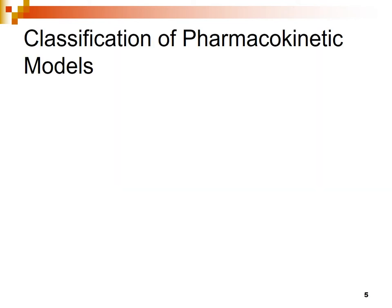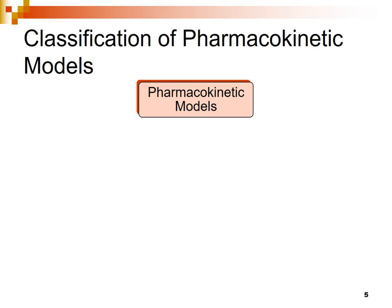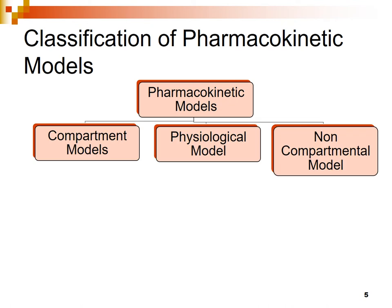Classification of pharmacokinetic models. Three types of approaches are used for estimation of different pharmacokinetic parameters: compartment models, physiological models, and non-compartmental models. Non-compartmental models are a model-independent method where different algebraic equations are used to calculate or estimate different pharmacokinetic parameters based on statistical moment theory.